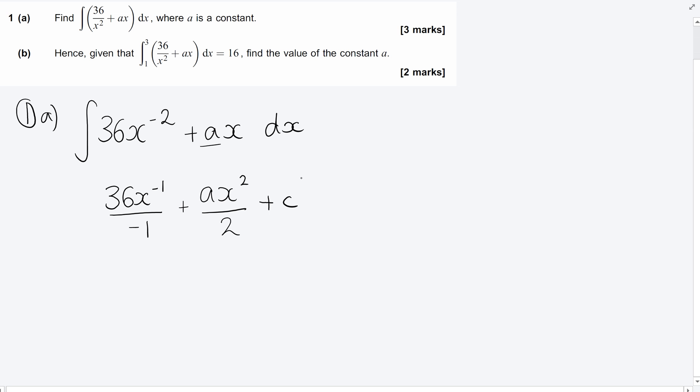Don't lose any marks in core two, but in core three and core four, you will lose marks. So that's a legitimate solution there. That's worth three marks. If I want to tidy it up a little bit, I might write it as minus 36x to the minus one plus one half ax squared plus c, or something similar to that. So that's worth three marks.